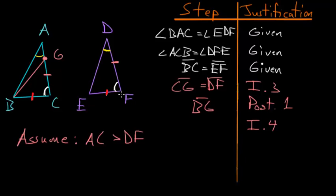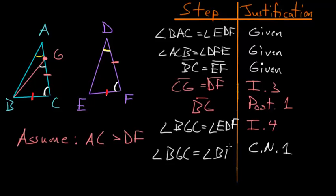If the two triangles are equal, then the angles within the triangles are equal as well. So this angle BGC would have to be equal to the angle EDF. Though due to Common Notion 1, which says that things which are equal to the same thing are equal to each other, since BGC and EDF are equal and EDF is equal to angle BAC, we know that angle BGC would also be equal to angle BAC.